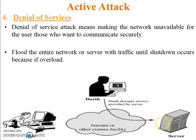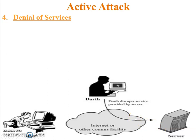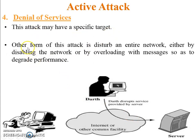The server communicates with Darth only, and after some time the server is overloaded with Darth's messages and shuts down. Whenever the server shuts down, Bob cannot get access to the server — this is called denial of services. This attack may have a specific target or server. Another form of this attack is to disturb an entire network either by disabling the network or by overloading it with messages so as to degrade performance.